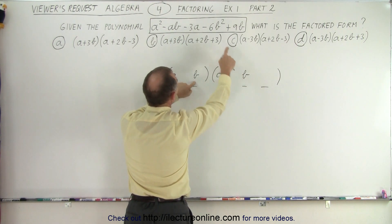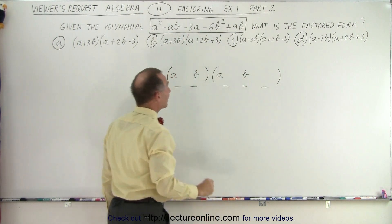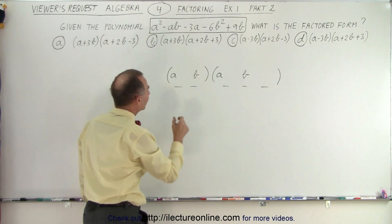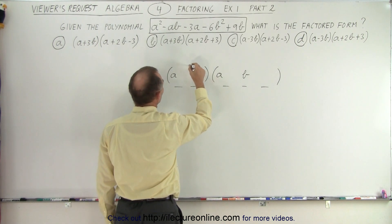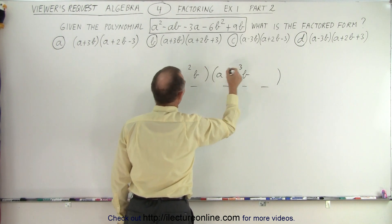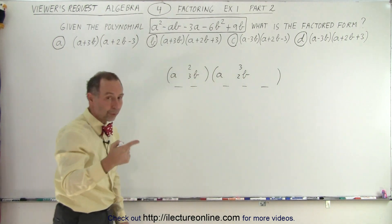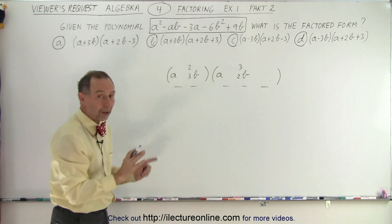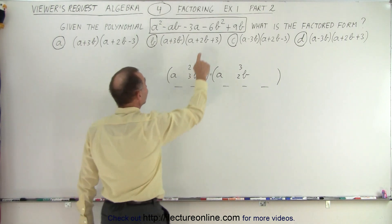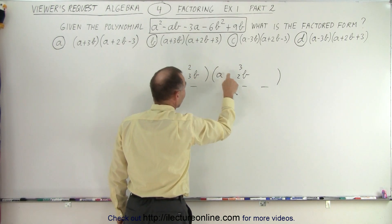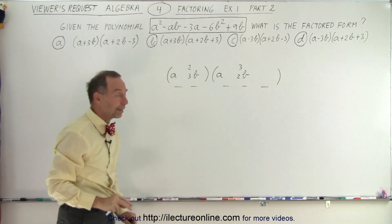I have a b times b to give me a b squared, but now I need a negative six, which means I either need a two and a three, or a three and a two. Notice I don't know if it's two, three, or three, two, and I don't know which ones are positive or negative. Notice that it's a negative six b squared, so one of them has to be negative, but I'm not going to worry about that yet.